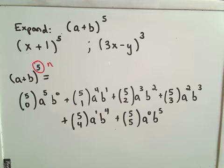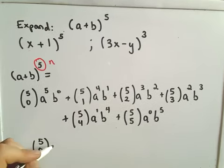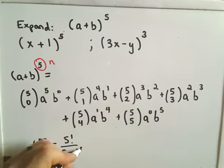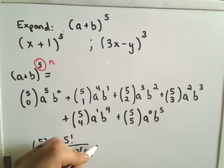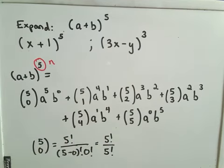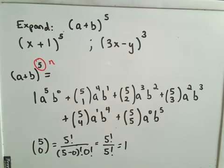Let's talk about evaluating these coefficients. I'll calculate a couple quickly. For 5 choose 0, using our formula that's 5 factorial over (5 minus 0) factorial times 0 factorial. This simply reduces to 5 factorial over 5 factorial, and anything divided by itself is just 1. So 5 choose 0 equals 1.